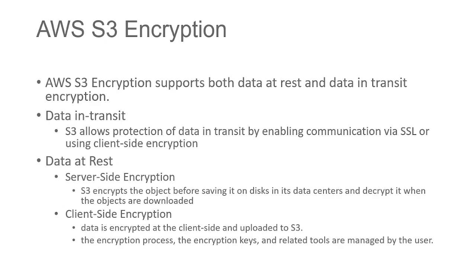Data at rest includes server-side encryption — S3 encrypts the object before saving it to the disk in its data centers and decrypts it when the objects are downloaded. For client-side encryption, data is encrypted at the client side and uploaded to S3, and the encryption keys and related tools are managed by the user.